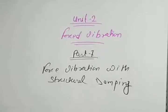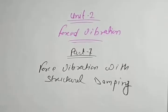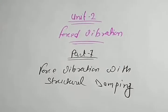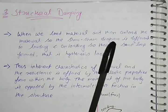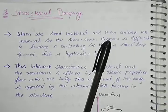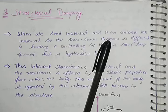Welcome back. In 4B Engineers, we are studying forced vibration, Unit 2, Part 7. We will study forced vibration with structural damping or hysteresis damping. First, we will see what structural damping is. When we apply a load to a material and then remove that load, vibration develops in the body due to inelasticity and intermolecular friction. The vibration is also resisted because of structural damping due to intermolecular friction.